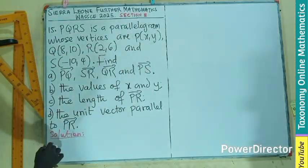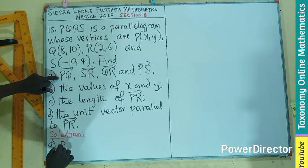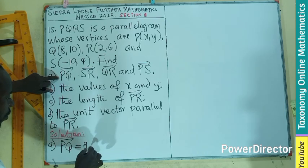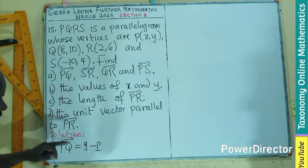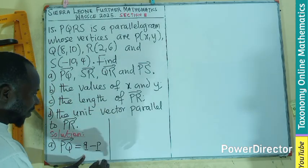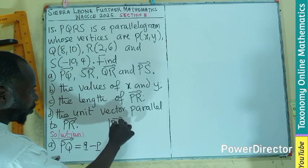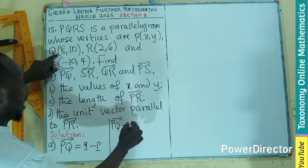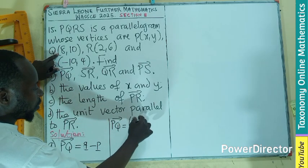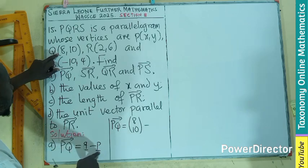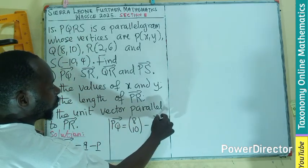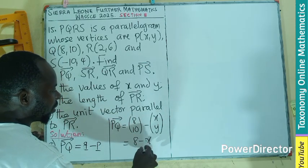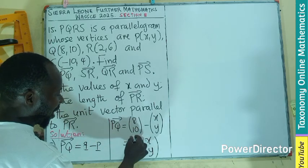For the first part, to find vector PQ, we need to find position vector Q minus position vector P. So PQ equals position vector Q, which has been given as (8, 10), minus position vector P, given as (X, Y). When I subtract that, my answer will be (8 - X, 10 - Y). We are done for the first part.